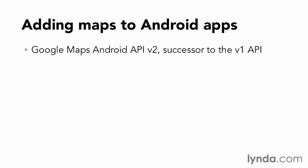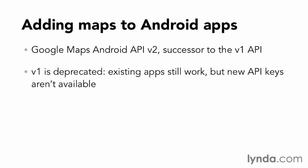This API is the successor to an older version, version 1. That version is now deprecated. If you built apps using that version, they should still work, but you can't get new API keys for that version anymore. For new applications, you must use version 2.